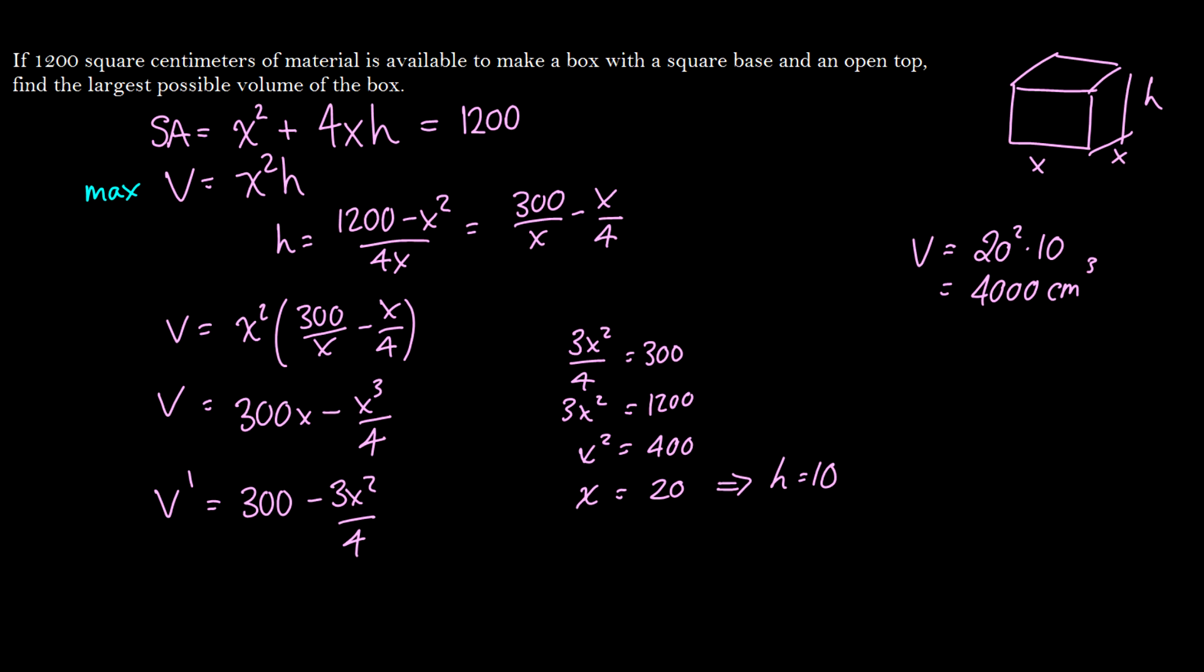And if we pick, let's say, let's try if x is equal to 19. So we're going to have 19 squared times, well, then we need to figure out what x is equal when it's 19. So it's going to be some number slightly greater than 10 for h. And this is going to be a little bit less than 4,000.